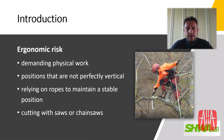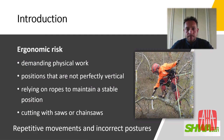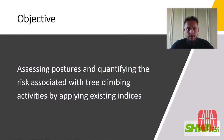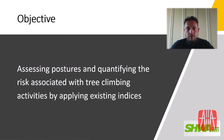Ergonomic risk is a very important factor in this sector, as operators perform demanding physical work often in positions that are not perfectly vertical, relying on ropes to maintain a stable position. Arborists perform cutting with saws and chainsaws, repeating movements and postures that have never been objectively assessed. The aim of this work was to apply existing indices to assess posture and quantify the associated risk.